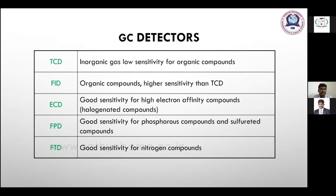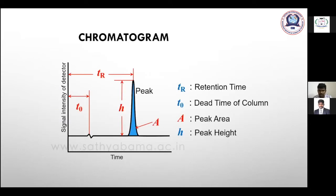GC detectors include FID, ECD (electron capture detector), FPD, FTD, and mass spectrometry detectors. The detector is selected based on the target compounds — for example, ECD is excellent for pesticide analysis. The chromatogram has an X-axis representing retention time and a Y-axis representing signal intensity from the detector. Each peak represents a compound at a specific retention time.